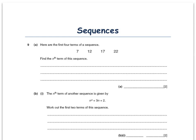Sequences are a really easy question at GCSE on a higher paper to pick up marks. It's just a case of remembering the simple rule. Here are the first four terms of a sequence: 7, 12, 17, 22. Find the nth term of this sequence.